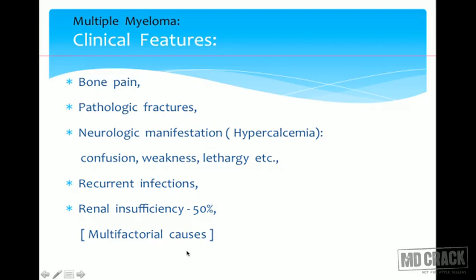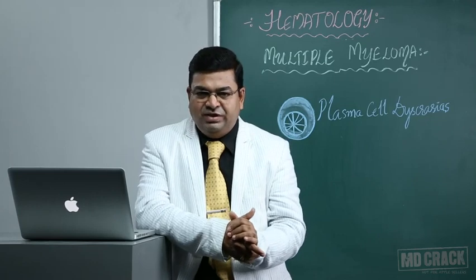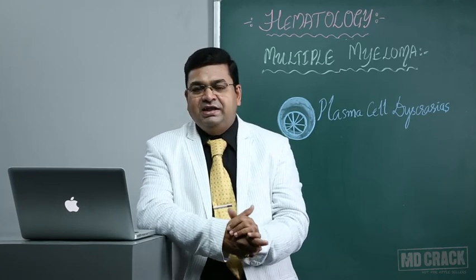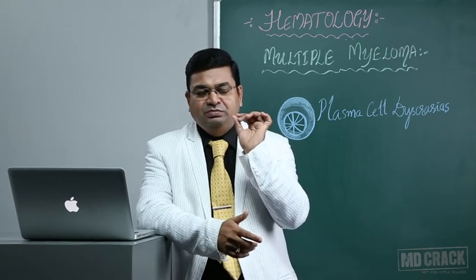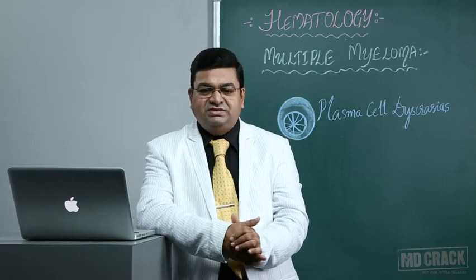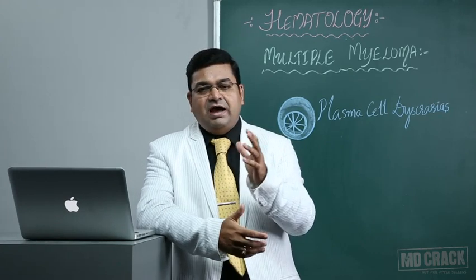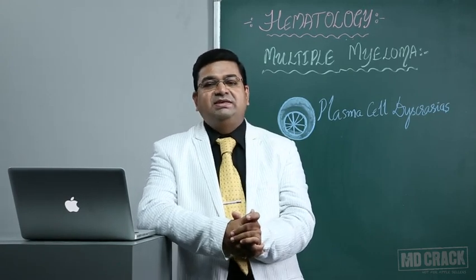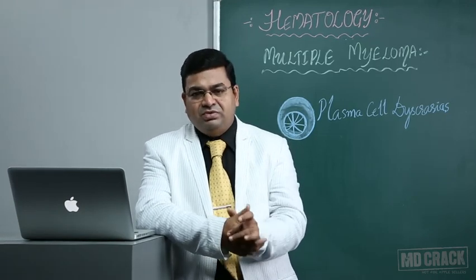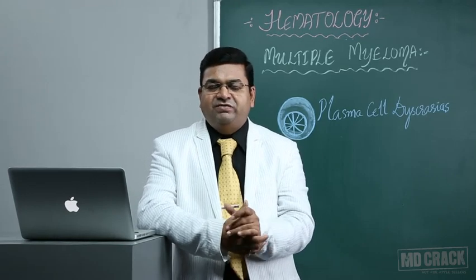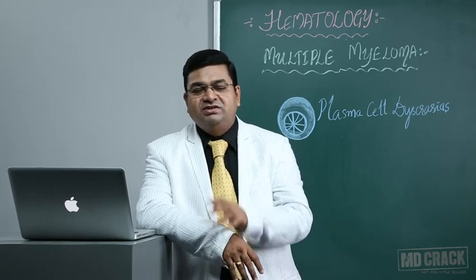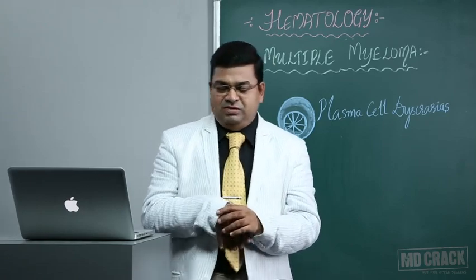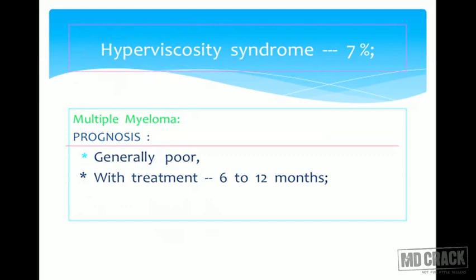Renal insufficiency can develop - called myeloma kidney - showing peculiar deposition of amyloid. Plasma cell disorders are one of the most important causes of amyloid, which can be deposited in a variety of organs, most importantly the kidney. Renal biopsy is performed and sections are stained with Congo red stain; under polarizing microscope, apple green birefringence indicates amyloid deposition. Congo red stain with polarizing microscope to look for apple green birefringence is a very important test in multiple myeloma cases.